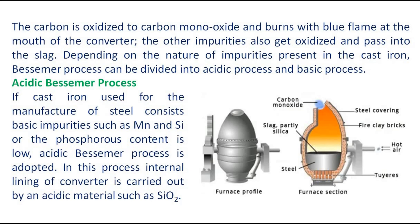Acidic Bessemer Process. If the cast iron used for the manufacture of steel consists of basic impurities such as manganese and silicon, or the phosphorus content is low, the acidic Bessemer process is adopted. In this process, the internal lining of the converter is carried out by an acidic material such as silicon dioxide.